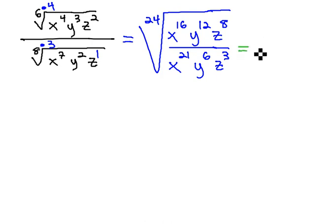Now that everything is under a common index of 24, we can simplify by subtracting exponents. If we end up with a negative answer, the result will go in the denominator. If we end up with a positive answer, the result will go in the numerator.